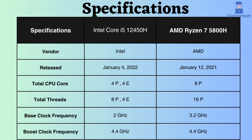The Intel Core i5-12450H was launched approximately 12 months after the introduction of the Ryzen 5800H. The Intel Core i5-12450H has 4 performance cores and 4 efficiency threads, whereas the Ryzen 7 5800H has 8 performance cores and 16 performance threads. Having more performance cores helps AMD perform better in multi-threaded tasks like video editing and 3D rendering compared to the Intel i5-12450H.